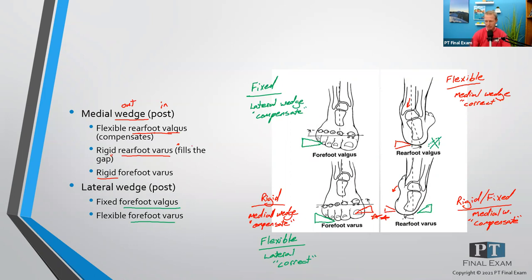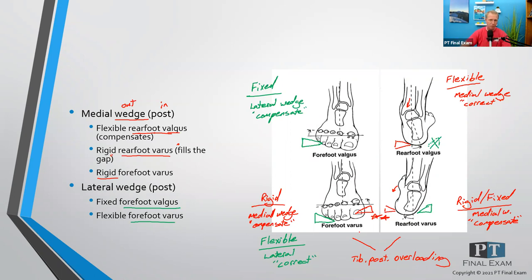So forefoot varus and rearfoot varus, if unchecked, will lead to tibialis posterior overloading. That would be a classic NPTE-style question — what does the tibialis posterior do? Tibialis posterior travels around the backside of the medial malleolus and is an inverter and supinator, but its primary job is eccentric control of pronation and eversion. So there you have all the ins and outs related to the forefoot and rearfoot varus and valgus.